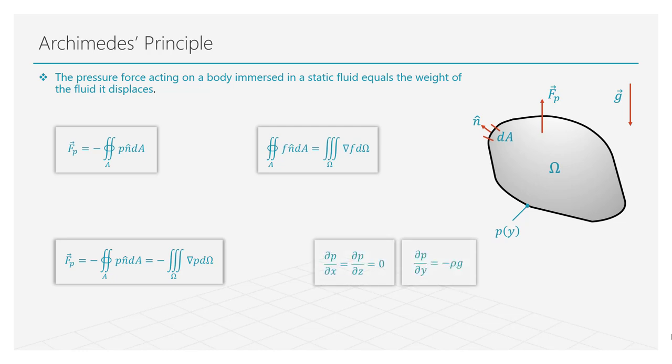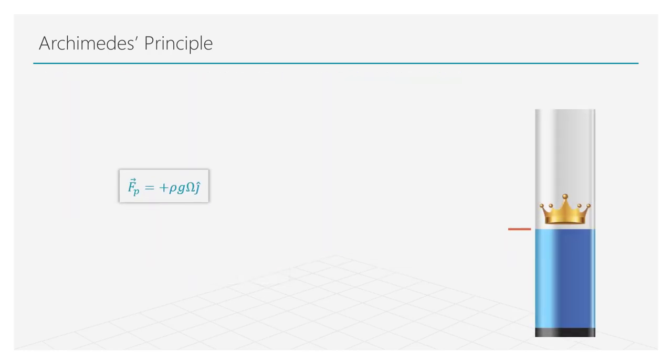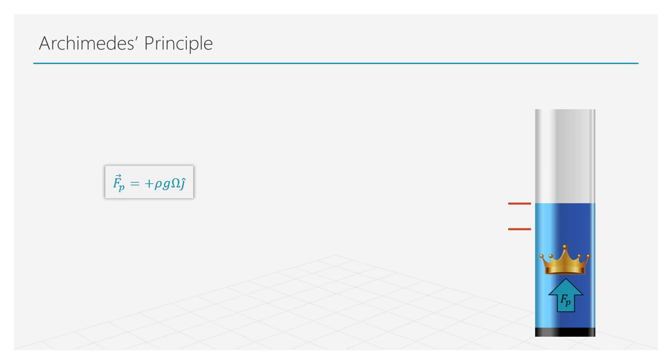From our previous analysis, we know that the gradient of the pressure is not zero only in the direction of the gravity vector. In our case, we assume the y-direction. Substituting the terms, we get this final expression. This tells us that a body submerged in a fluid displaces the fluid and the pressure force acting on the body is equal to the weight of the volume of fluid displaced.